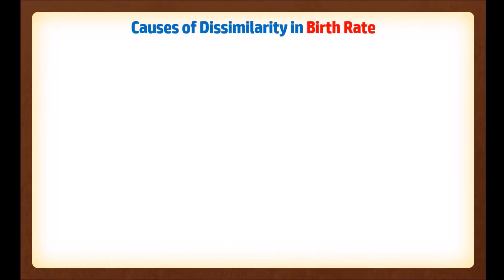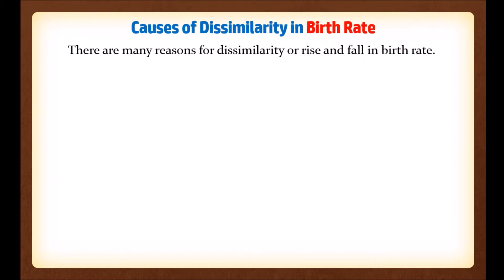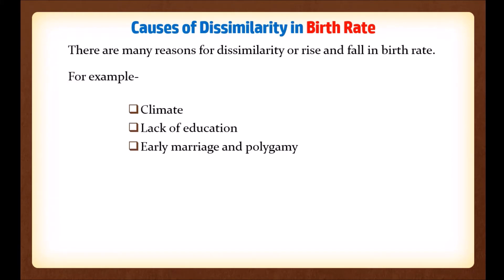Let's get started with today's lesson: causes of dissimilarity in birth rate. There are many reasons for dissimilarity, or rise and fall, in birth rate — for example, climate, lack of education, early marriage and polygamy, low living standard, infant mortality rate, and so on.